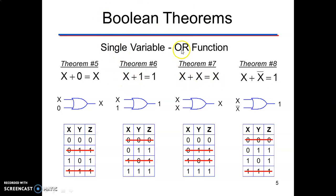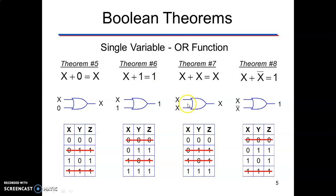The same set of theorems for OR operation. x+0 = x: 0+0 = 0 and 1+0 = 1, so any variable logically added with 0 results in the same variable. x+1 = 1: 0+1 = 1 and 1+1 = 1, so any variable logically added with 1 results in 1. x+x = x: 0+0 = 0 and 1+1 = 1. x+x̄ = 1: 0+1 = 1 and 1+0 = 1, so when any variable is logically added with its complement, the result is 1.